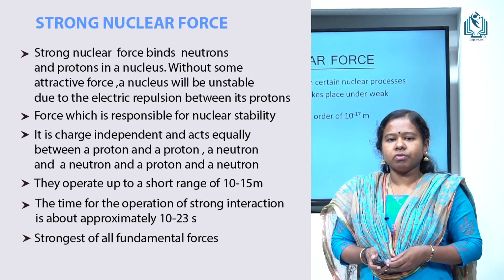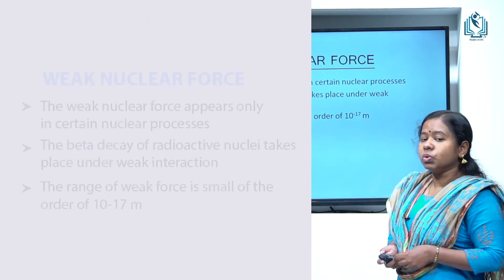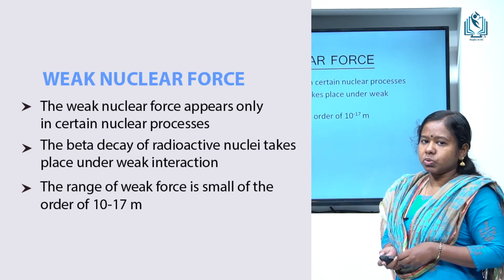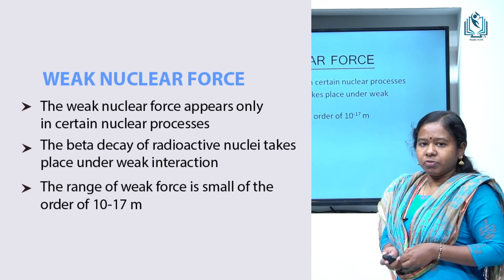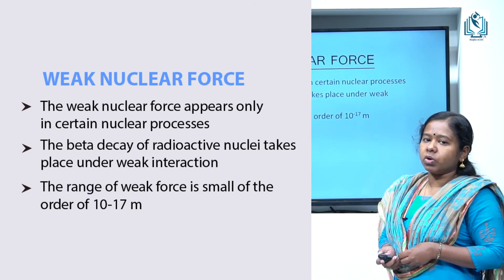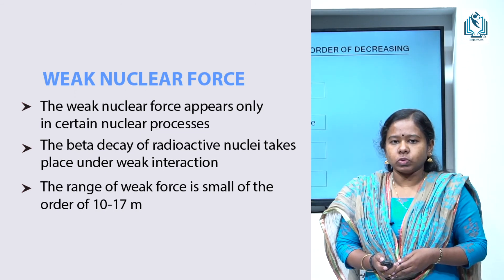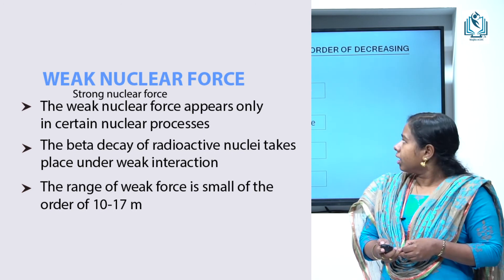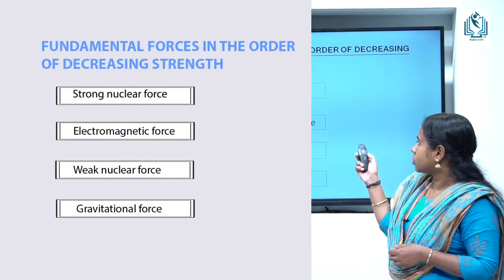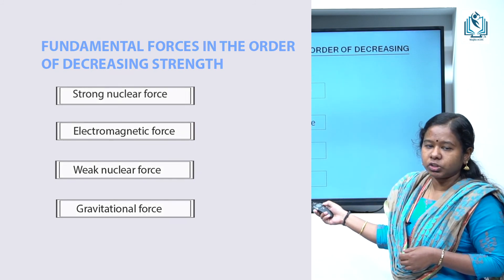The fourth fundamental force is the weak nuclear force, which appears only in certain nuclear processes. The beta decay of radioactive nuclei takes place under weak nuclear interaction. The range of the weak force is small, of the order of 10⁻¹⁷ meters. The four fundamental forces in order of decreasing strength are: strong nuclear force, electromagnetic force, weak nuclear force, and gravitational force.